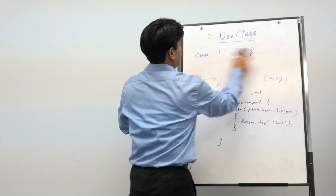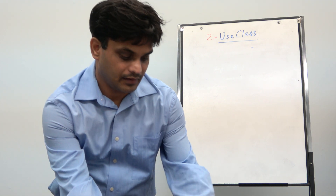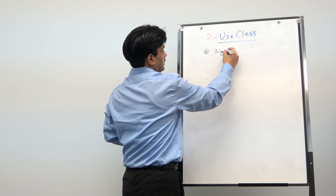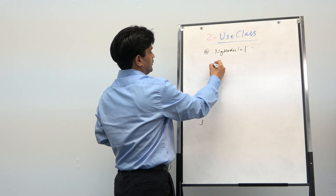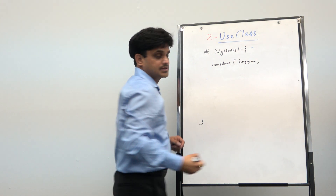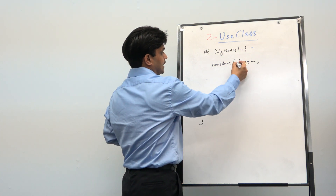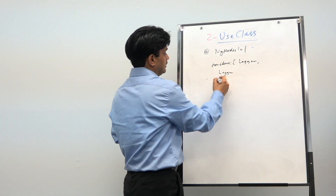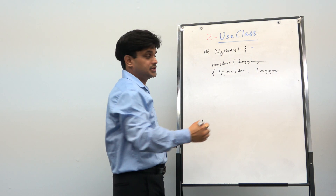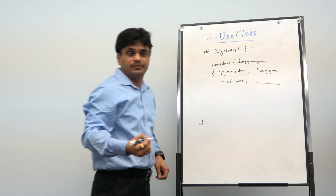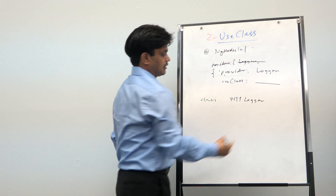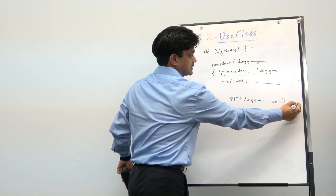Here is how to do it. Suppose at the module level you have an NgModule and inside its providers list you had just 'Logger'. Now we change that to an object: provide: Logger, useClass: HTTPLogger — and we can delete the plain Logger registration. The useClass field takes the new class name we want to inject.